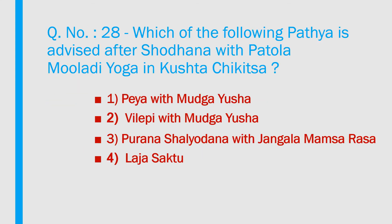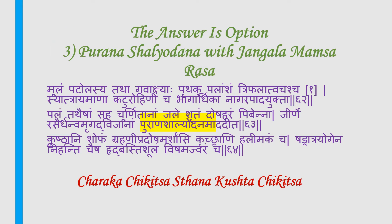Question number 28: Which of the following pathya is advised after shodhana with padolam oladhi yoga and kushta chigilsa? 1) Paya with mudgayusha, 2) Vilebi with mudgayusha, 3) Purana shali udhana with jangalamamsarasa, 4) Laja sattu. Answer is option 3 — Purana shali udhana with jangalamamsarasa. The verse covers kushta, shobha, grahani, pradosha, arshas, kricha, harimaka and other conditions treated with this herb. Reference: Charaka Chigilsa Sthana, Kushta chigilsa.